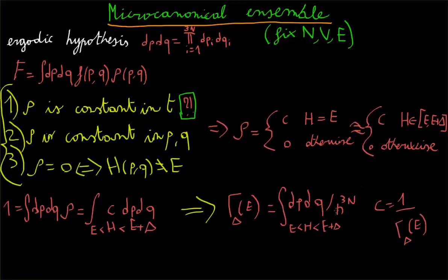We're simply putting this h factor here, this Planck constant, raised to the power of 3n, because we're interested in having a probability distribution which is non-dimensional. Just because it will be more convenient along our computation.